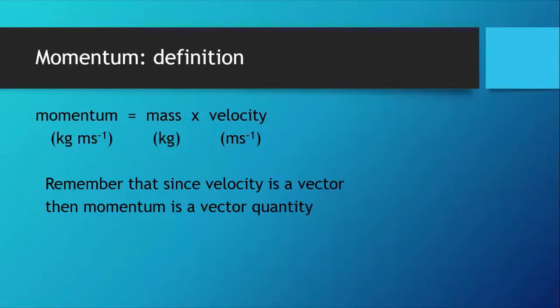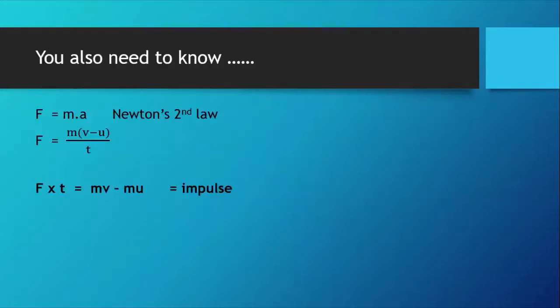Since velocity is a vector, momentum too is a vector quantity. If we look at Newton's second law, f equals ma, acceleration is v minus u over t, so f equals m into v minus u over t. Let's rearrange that: f times t equals mv minus mu.